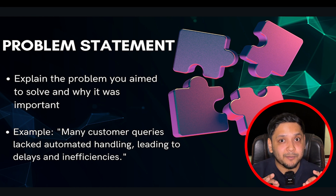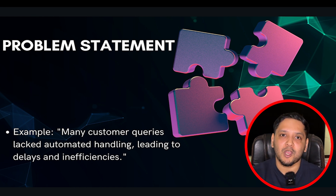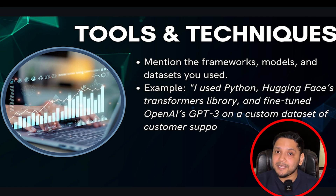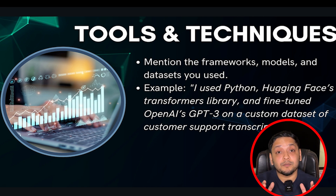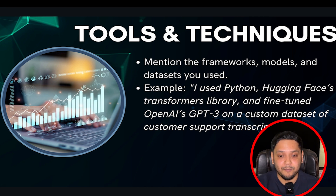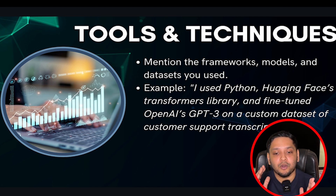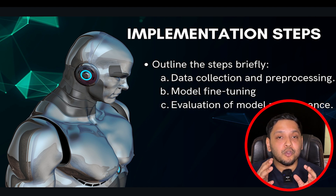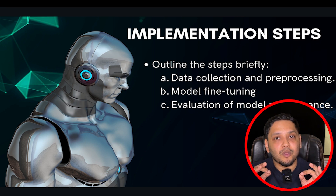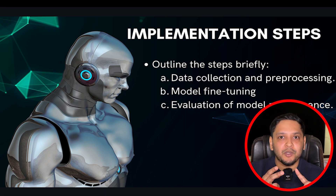The third thing to explain is the tools and techniques, where your technical expertise gets highlighted — mention what framework, model, and dataset you used. For example: I used Python and the Hugging Face Transformers library and fine-tuned the OpenAI GPT-3 on a custom dataset of customer support transcripts. Then you have to explain the implementation steps — briefly outline the steps you followed, starting with data collection and data preparation.